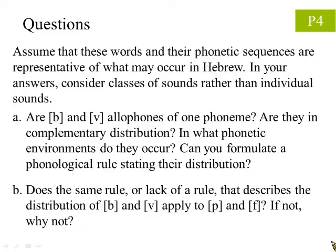Question A asks, if [b] and [v] are allophones of the same phoneme, are they in complementary distribution? In what phonetic environments do they occur? And can you formulate a phonological rule stating their distribution? Question B asks, if the same rule or lack of a rule that describes the distribution of b and v apply to p and f? If not, why not?